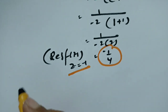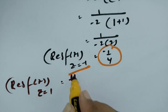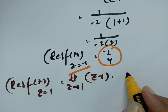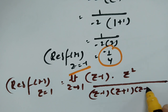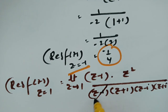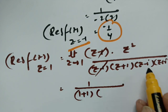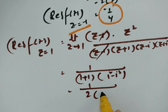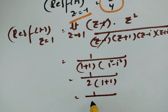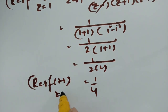For the residue at z = 1: we compute limit z → 1 of (z - 1)·f(z). Writing f(z) = z² / [(z - 1)(z + 1)(z - i)(z + i)], the (z - 1) terms cancel. Substituting z = 1 gives 1² / [(1 + 1)(1 - i)(1 + i)] = 1 / [2·(1 - i²)] = 1 / [2·2] = 1/4. So the residue at z = 1 is +1/4.